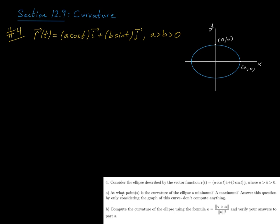Now part a of this question says, at what point is the curvature of the ellipse a minimum? How about a maximum? Answer this question by only considering the graph of this curve. Don't compute anything.